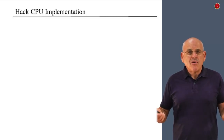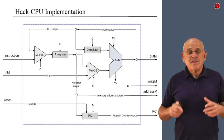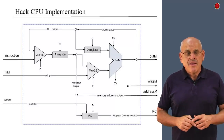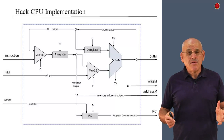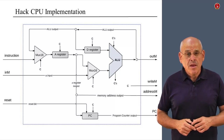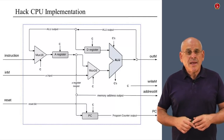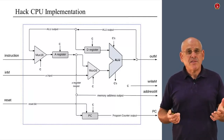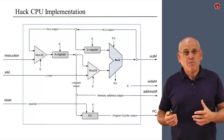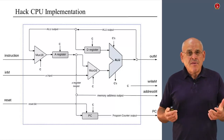So how do we implement this? Here is one proposed implementation — not the only way to build the CPU, but a pretty good one because it's elegant, simple, and relatively easy to do. Looking at the interface of this hardware diagram, we see it is 100% identical to what we described: three inputs coming in and four outputs coming out.